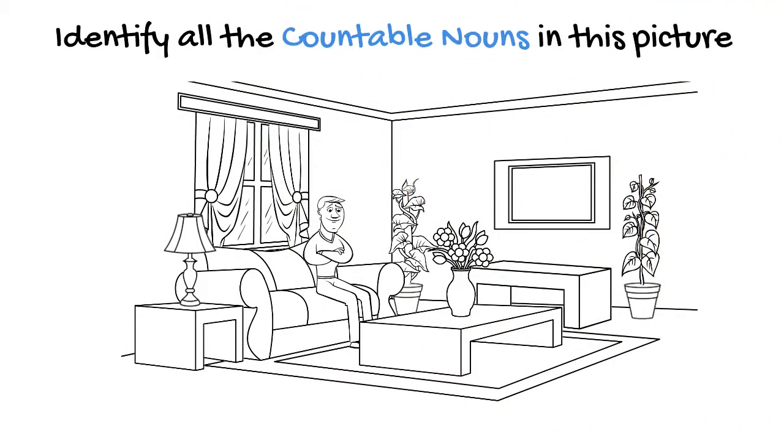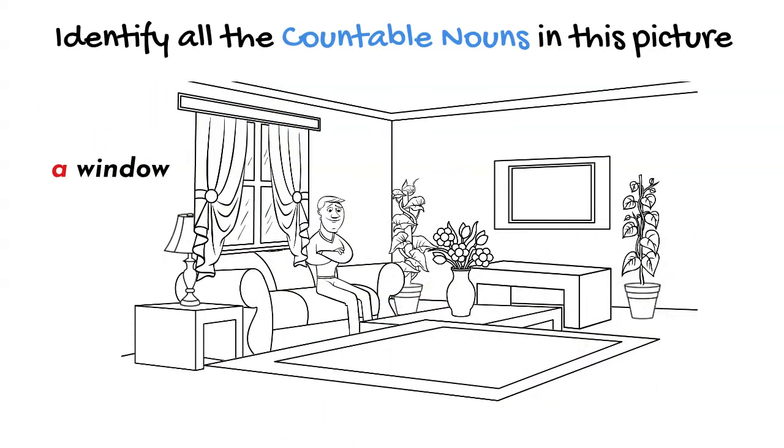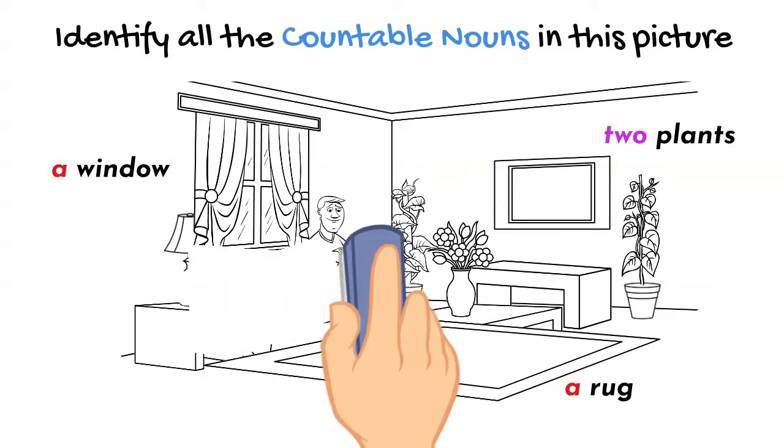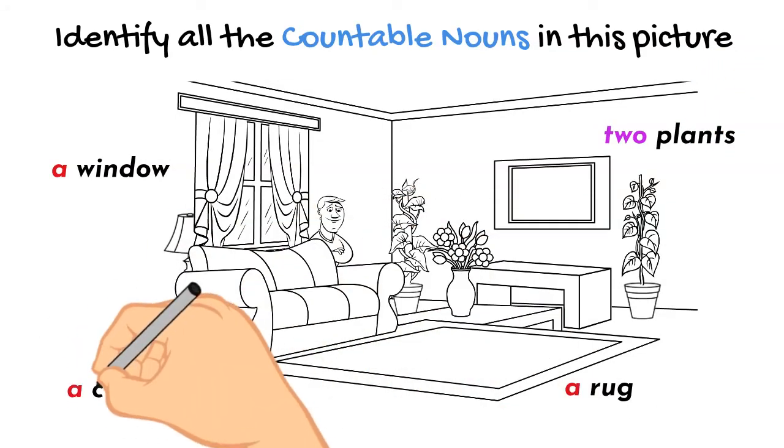Identify all the countable nouns in this picture. A window. A rug. Two plants. A couch.